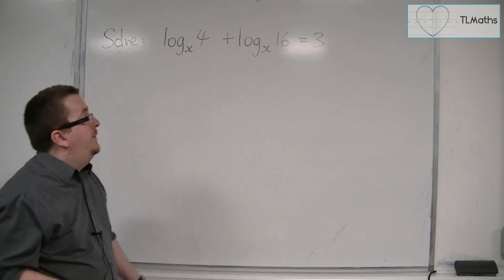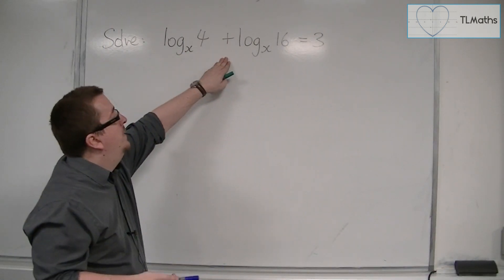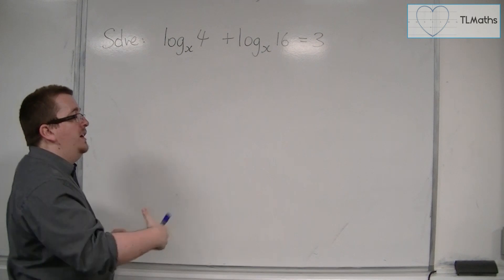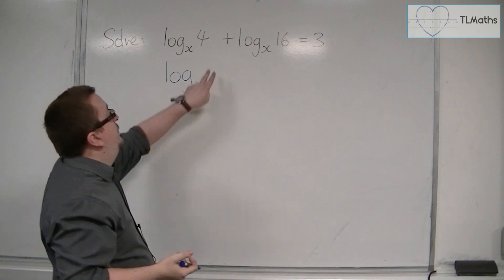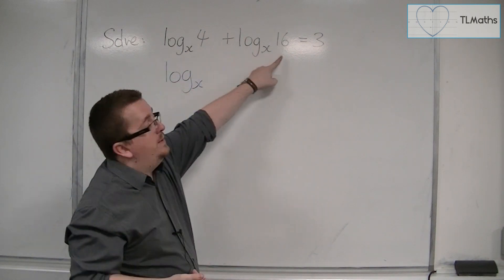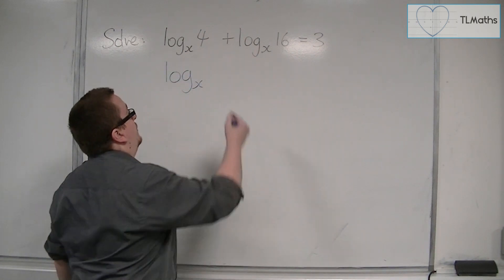So we know that when logarithms of the same base are added together, that means we can combine them into a single logarithm with the same base, where inside we have 4 times 16. So 64.